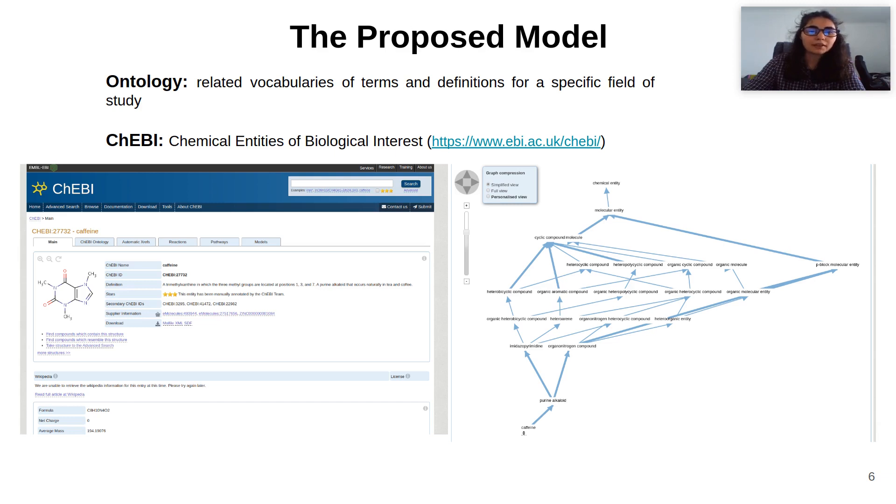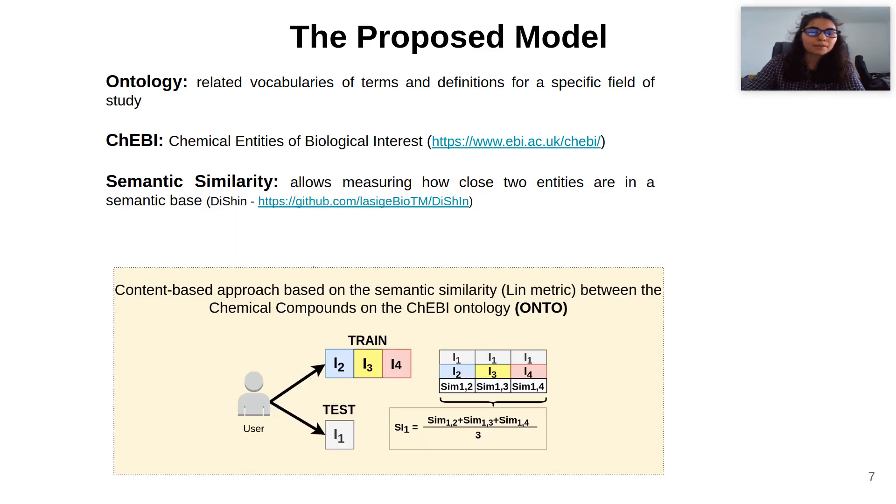Looking at ChEBI, for example, if we are interested in the compound caffeine, the ontology provides a large amount of information, as well as a graph network with connections to other compounds. The ontology allows us to calculate the semantic similarity between chemical compounds, working as the features of our items.